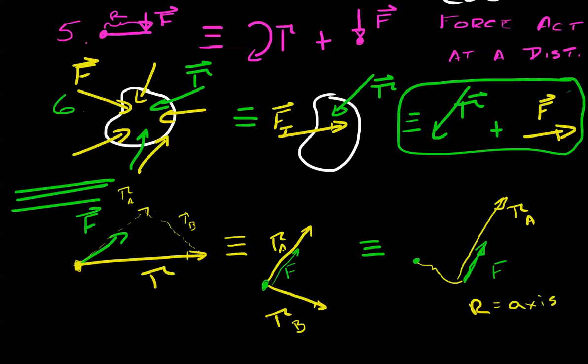And there's also a corresponding pitch. The pitch is the ratio of torque A to F. And the name for this type of system is a wrench.